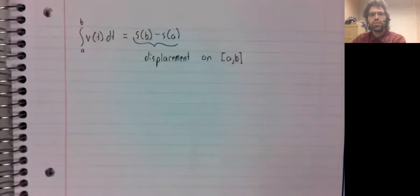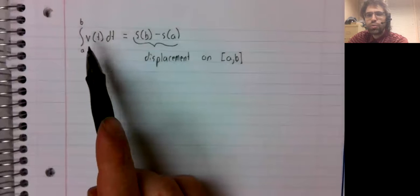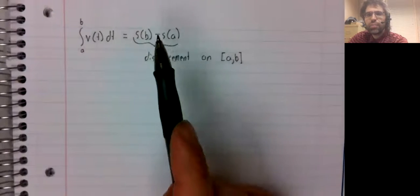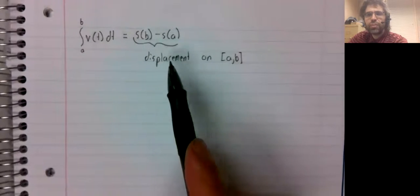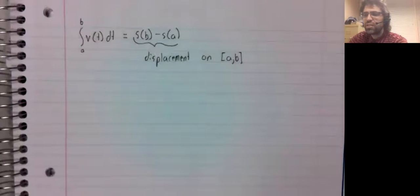We've made this observation that because the velocity is the derivative of the position function, the integral of the velocity is the net change in the position, which is the displacement.